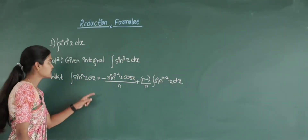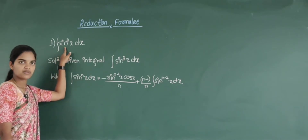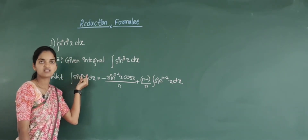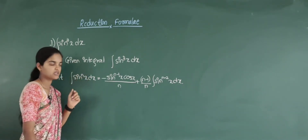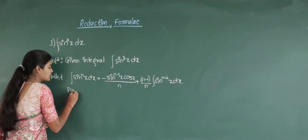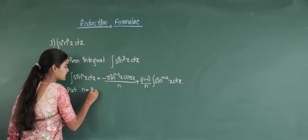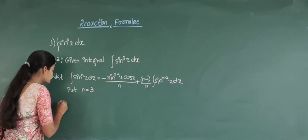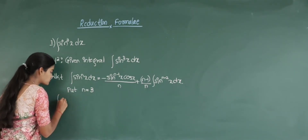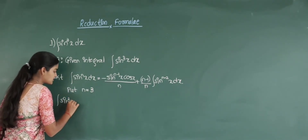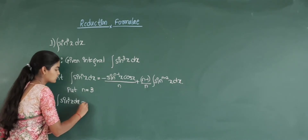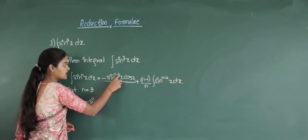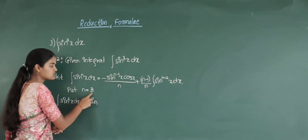Now to get the integration of sin cube x, what we have to do here is substitute n equal to 3. So put n equal to 3. That means integration of sin cube x into dx becomes: minus sin raised to n minus 1...